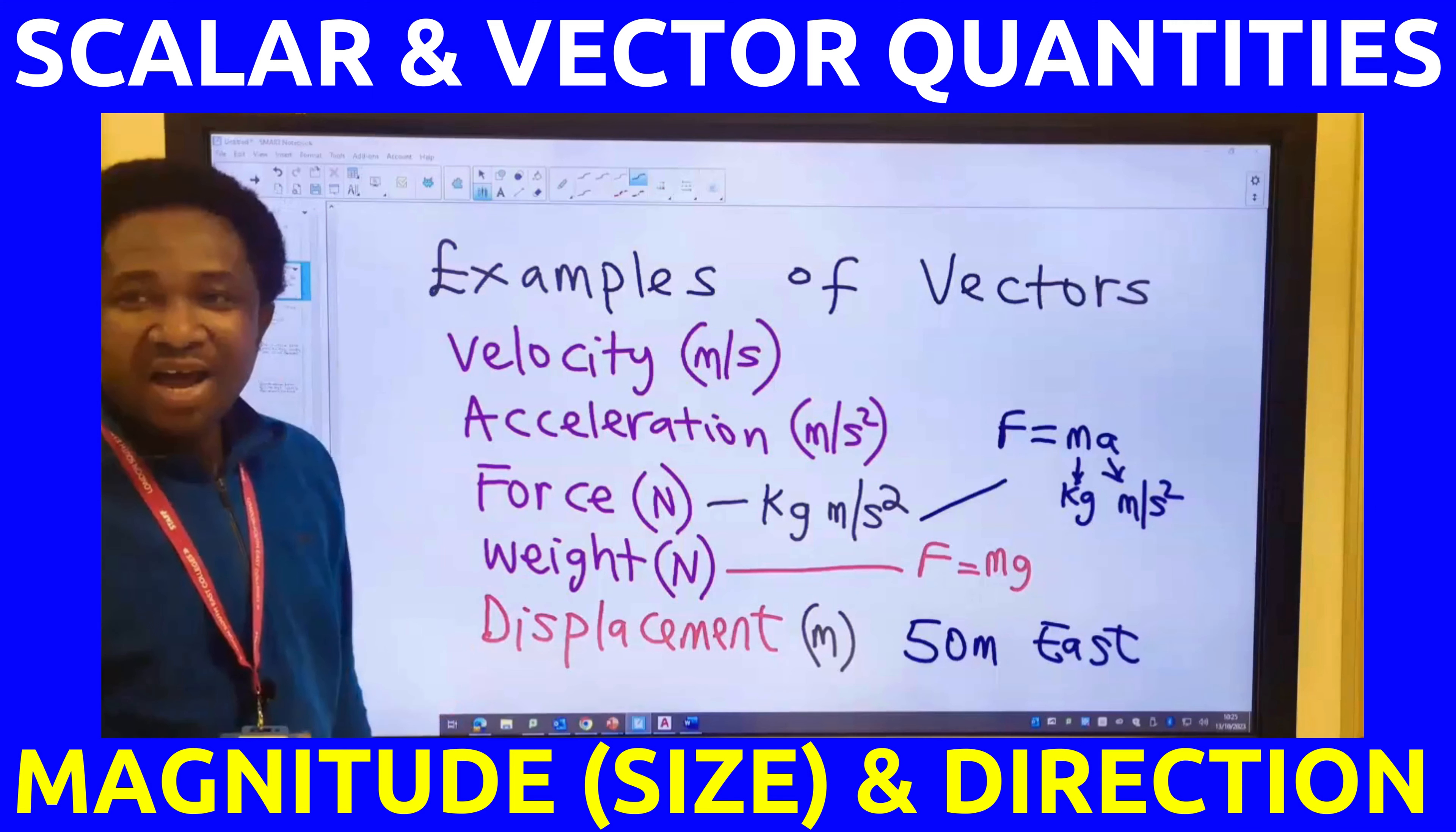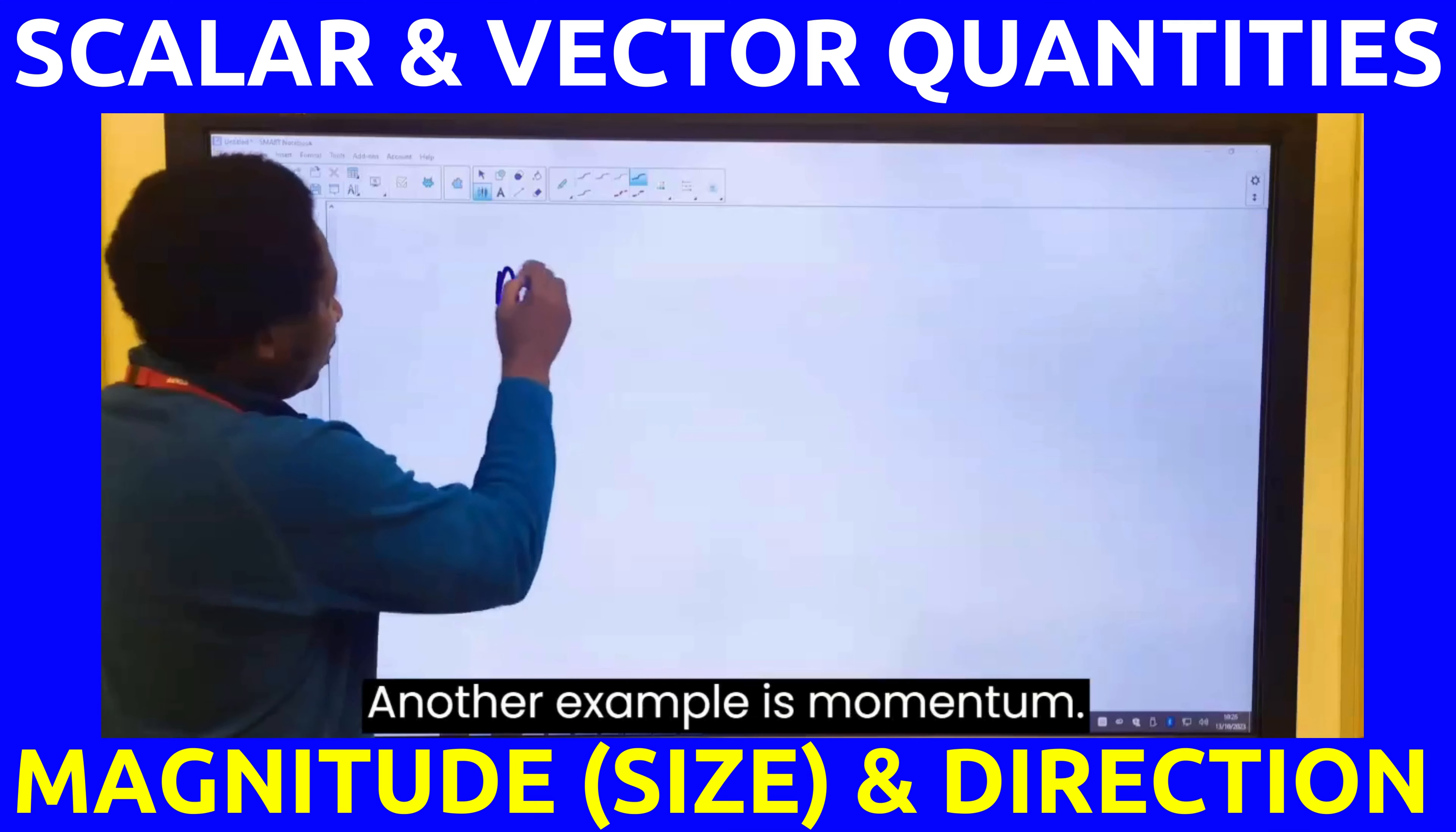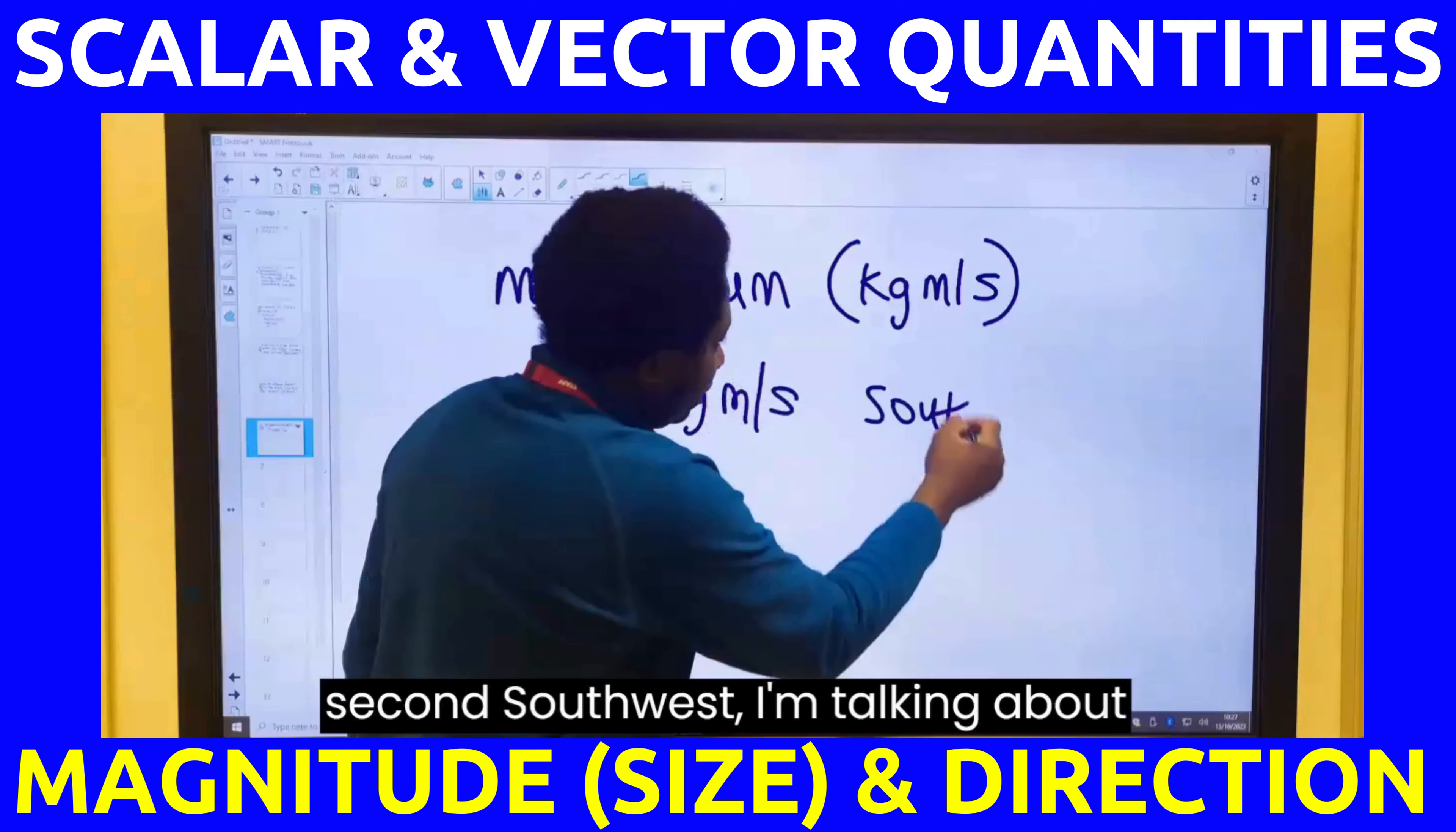In length, I can say that the land boundary is 53.7 meters. But if I include southeast, I'm not talking about displacement. Another example is momentum. The unit is kilogram meters per second.